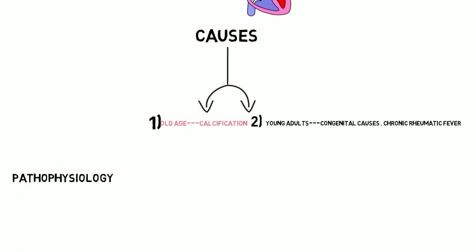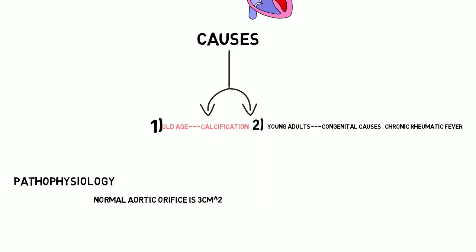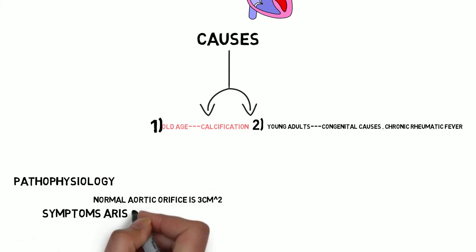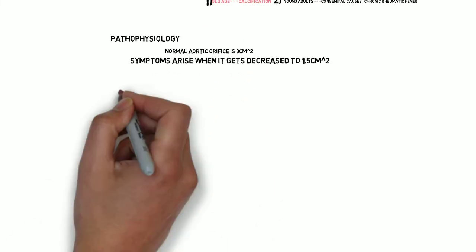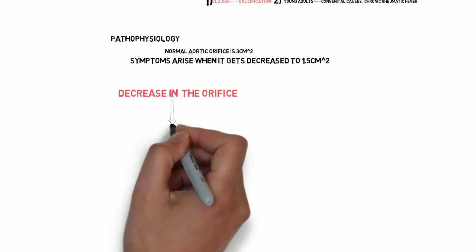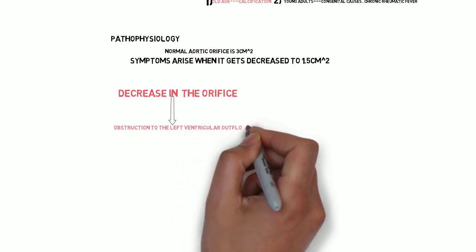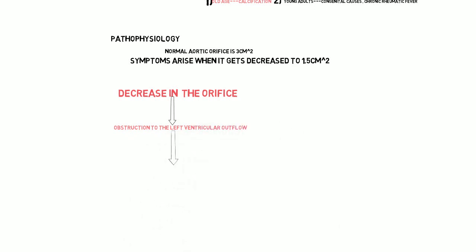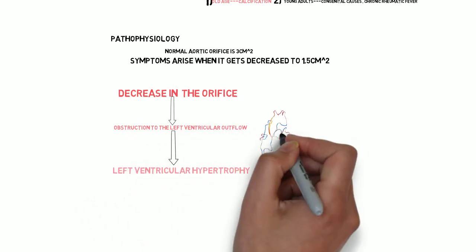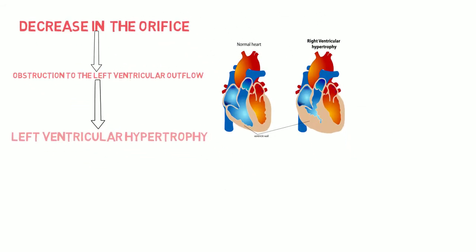Now let's discuss the pathophysiology of aortic stenosis. The actual pathology is due to the reduction in the orifice of the aortic valve, which leads to compromise of the left ventricular outflow. As a result, there is hypertrophy of the left ventricle. So very importantly, in aortic stenosis we are going to get left ventricular hypertrophy.